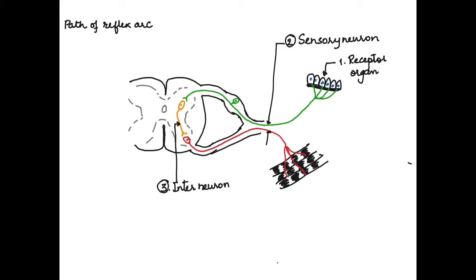The interneuron sends the impulse further to the motor neuron. The motor neuron is the fourth component and this sends the response to the effector organ. The effector organ is the fifth component of the reflex arc which brings about the response.